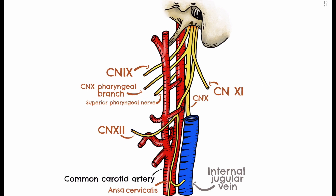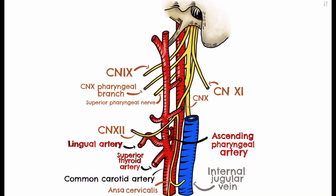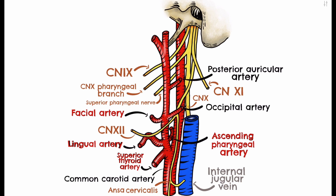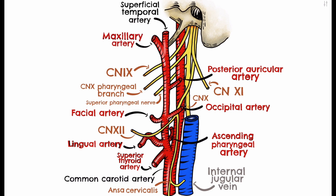Now let's run through the order of the external carotid branches in ascending order. Firstly, the superior thyroid artery. Next, the lingual artery, which runs deep to the stylohyoid and posterior belly of the digastric muscles. Then the ascending pharyngeal artery, which travels superiorly along the pharynx. The next branch is the facial artery. Then the occipital artery, which travels posteriorly, deep to the posterior belly of the digastric muscle. After this, the posterior auricular artery, which travels behind the external acoustic meatus and mastoid process. The penultimate branch is the maxillary artery, which gives off many of its own branches including the middle meningeal artery. And finally, the superficial temporal artery.